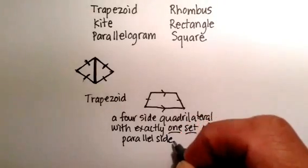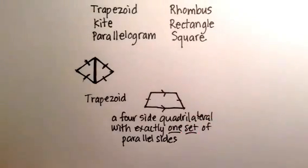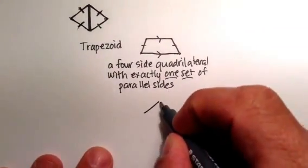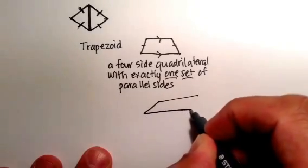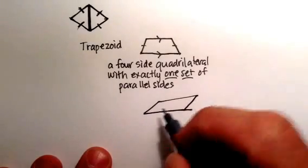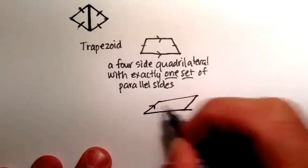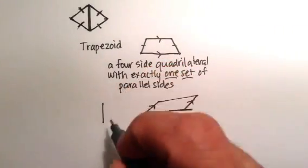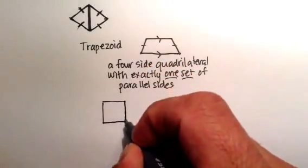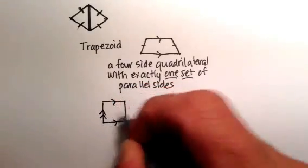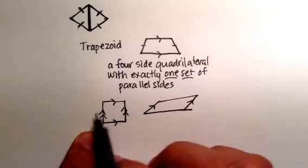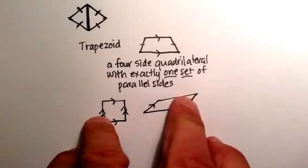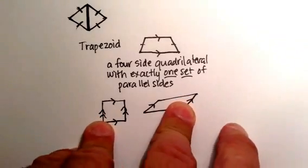Are there other kinds of quadrilaterals I could draw? Sure. Would a figure with two sets of parallel sides be a trapezoid? The answer is no, because it has two sides that are parallel. A trapezoid has exactly one set of parallel sides. We'll talk about some of the properties of trapezoids a little bit later.